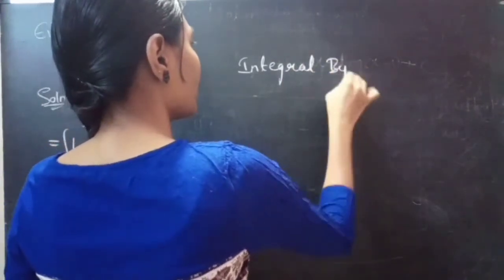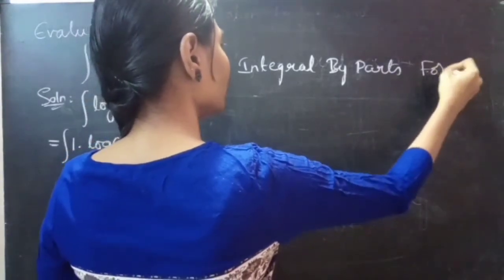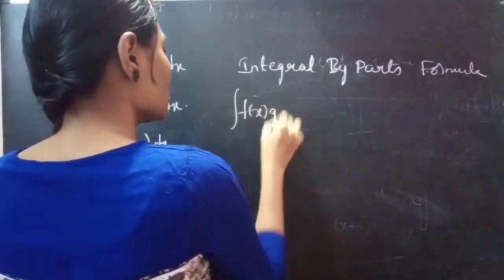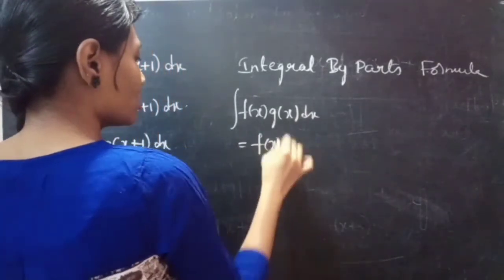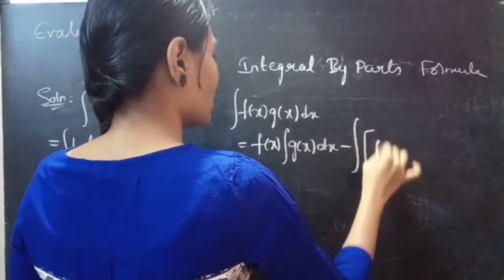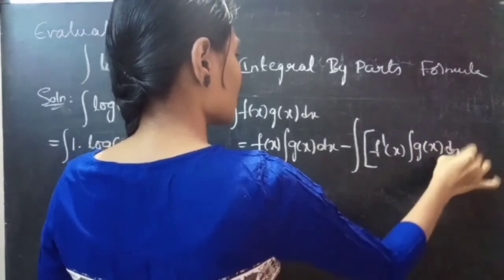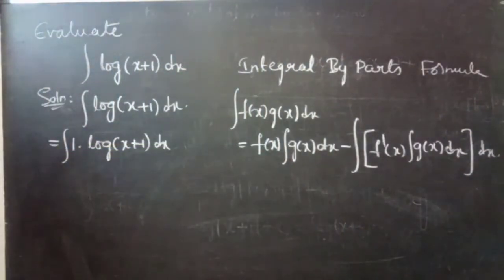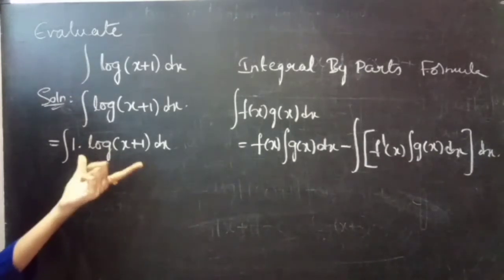Integration by parts formula: integral of f(x) into g(x) dx equals f(x) into integral g(x) dx, minus integral of f'(x) into integral g(x) dx, into dx. We are having 1 and a logarithmic expression.